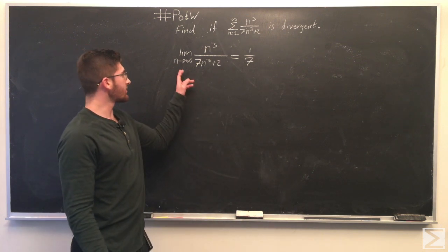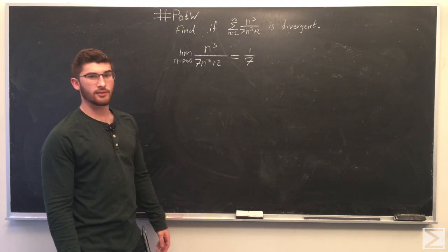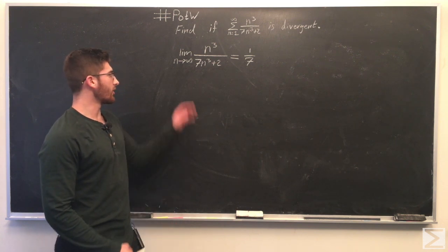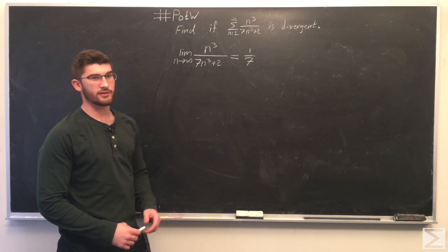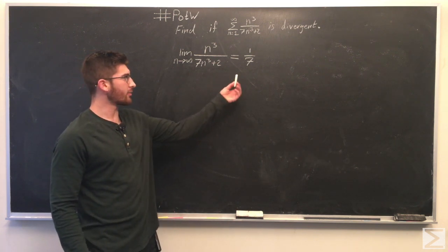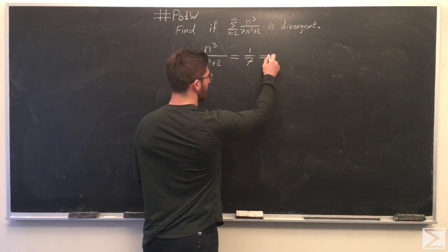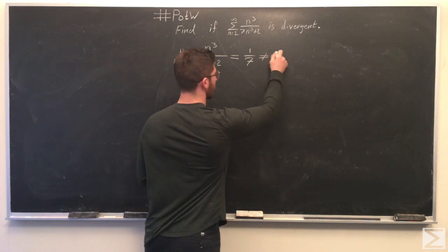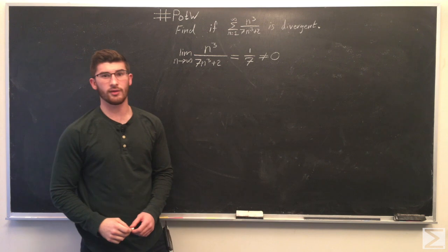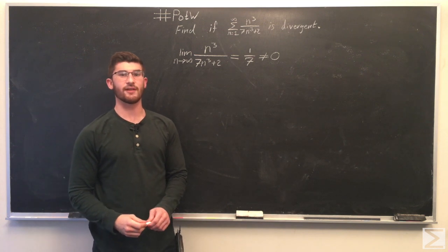Since as n approaches infinity, the limit of the series gives us 1/7, which is not equal to 0, we know that this series is divergent.